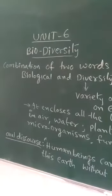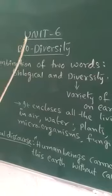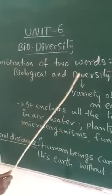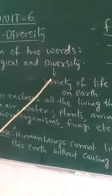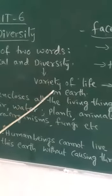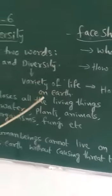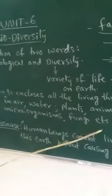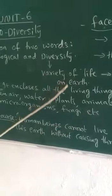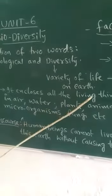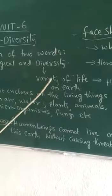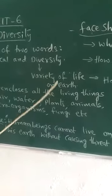We know biodiversity is related with environment. First we shall learn the meaning of biodiversity. It is the combination of two words, biological and diversity. What is the meaning of diversity? Diversity is the variety of things on the earth. We can see diversity in our nation means variety of people, languages, food, religions — all these we refer as diversity. Similarly here, diversity is variety of life, meaning living things on the earth.